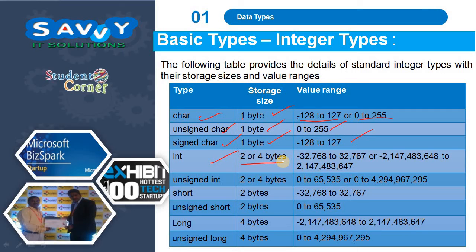Integer takes 2 or 4 bytes, with range minus 32,768 to 32,767 or minus 2,147,483,648 to 2,147,483,647. Unsigned integer takes 2 or 4 bytes, with range 0 to 65,535 or 0 to 4,294,967,295.